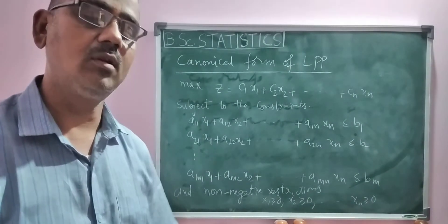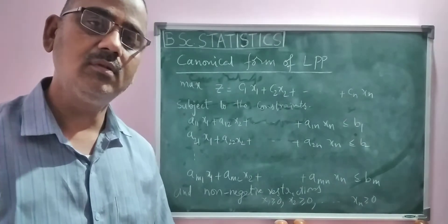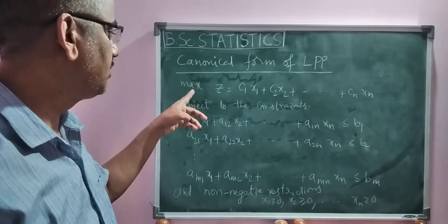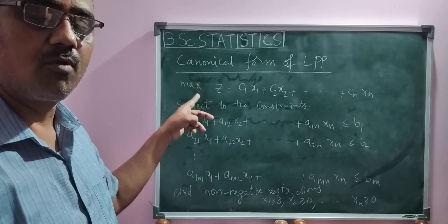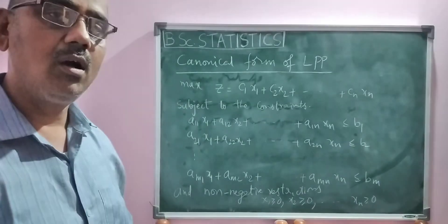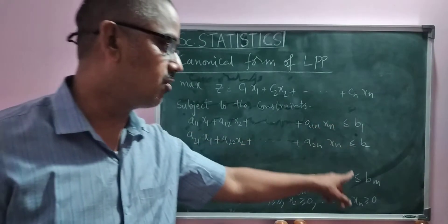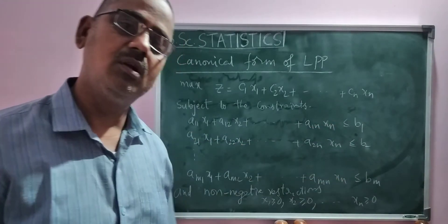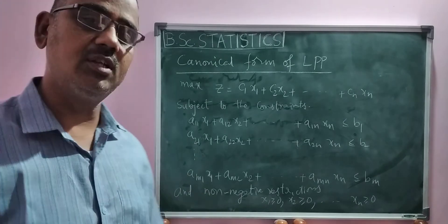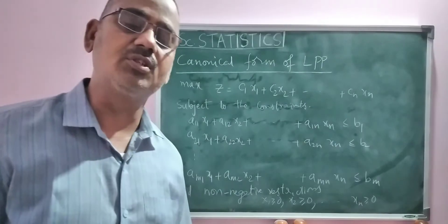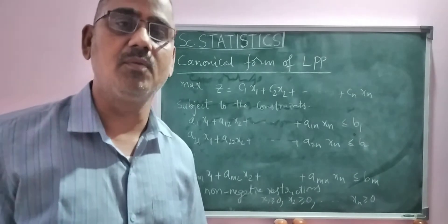Do you understand? What are the properties? Property number 1: the objective function must be maximization. Property number 2: the constraints must be of less than or equal to type. Property number 3: non-negative restrictions — that is, all the variables must be greater than or equal to 0. Thank you.